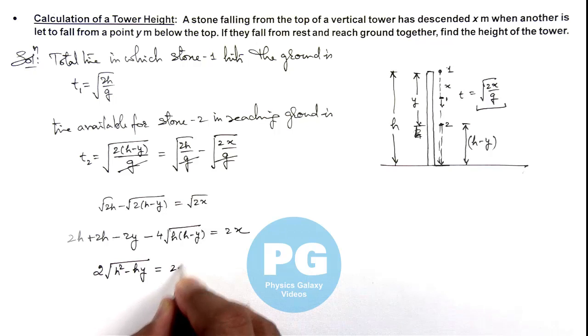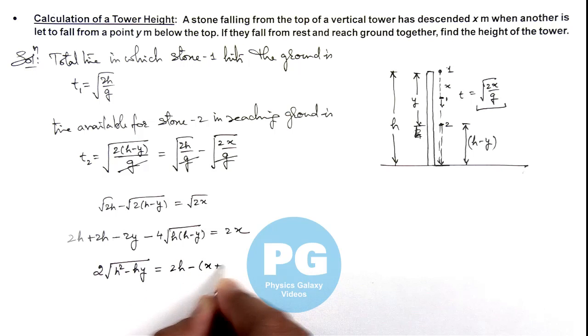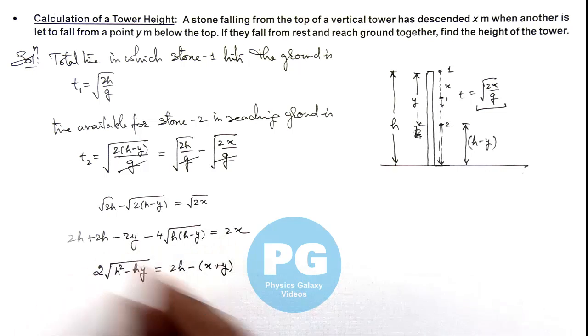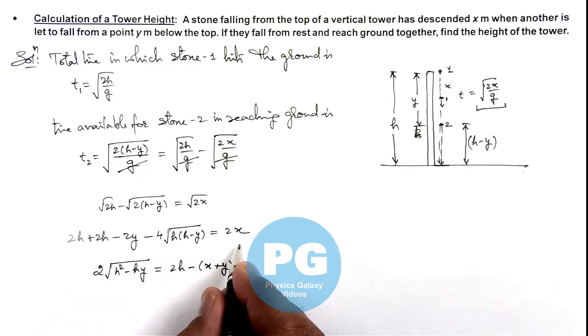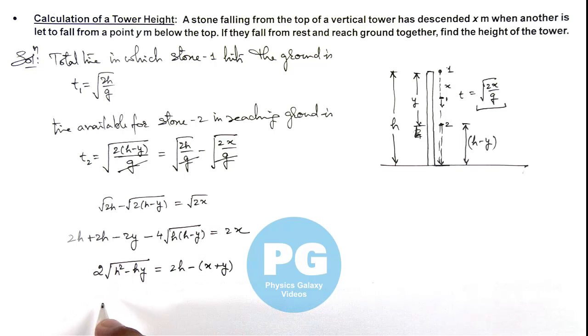This is 2h minus x plus y. I have cancelled the value of 2, numerical value 2. And if we further square it you can see.